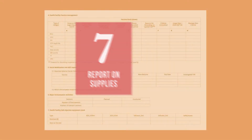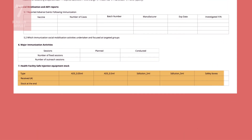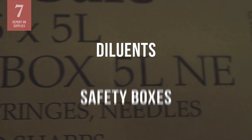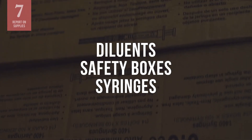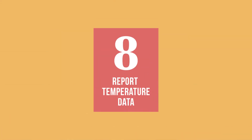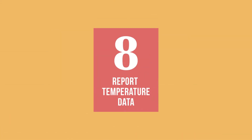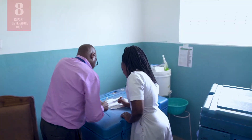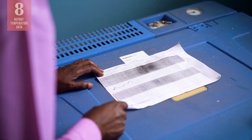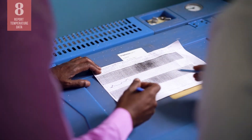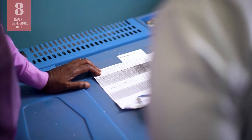Report on safe injection supply stock: how many diluents, safety boxes, and syringes of various types did you receive this month, and how many do you have in stock as of the end of the month? Report refrigerator temperature data. On the chart you used to record daily refrigerator temperatures, you should be able to see the highest and the lowest temperatures that were recorded in each piece of equipment this month.